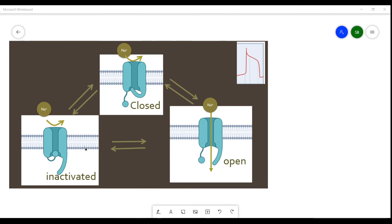The inactivated state is caused by this inactivation ball physically binding to the ion channel in such a way that it closes the ion channel in a different way to the other gate. Now the voltage gate is open, but the inactivation gate is closed.